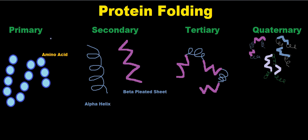The primary structure of protein folding is just a chain of amino acids. Each one of these little balls here is a single amino acid.